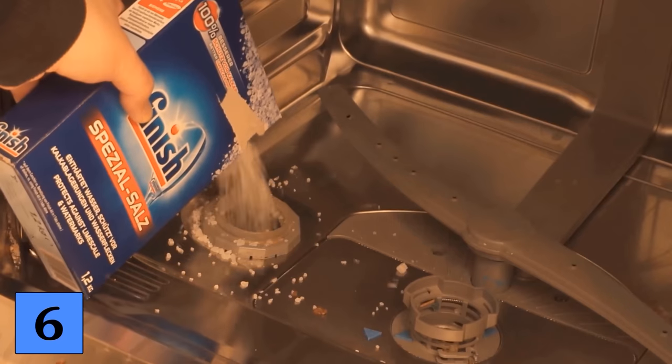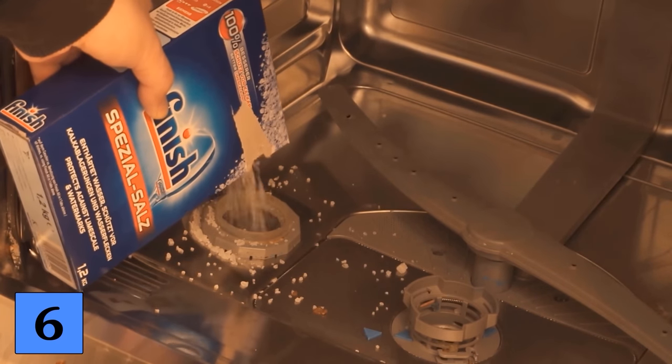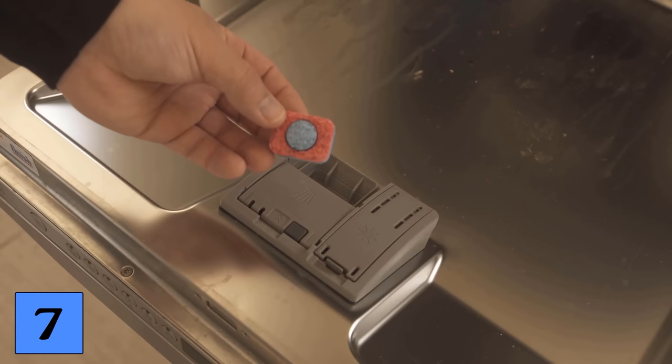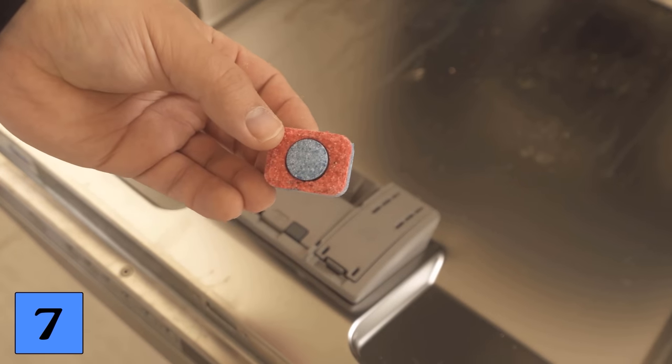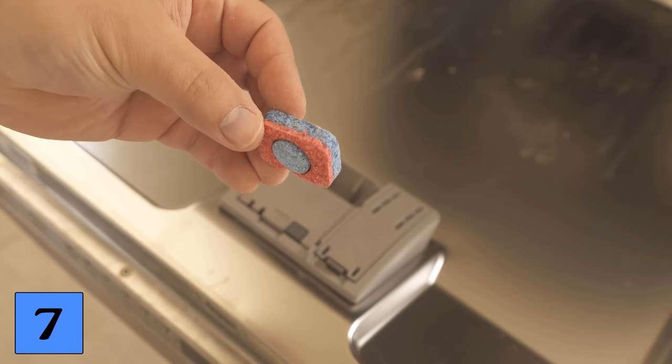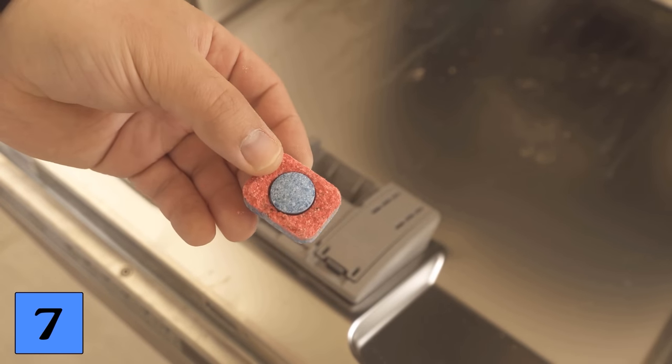Mistake number seven is the use of conventional dishwasher tabs. Because many of them are real environmental sinners and it is always clearly too much. That is, with half a tab, you could easily make it work.